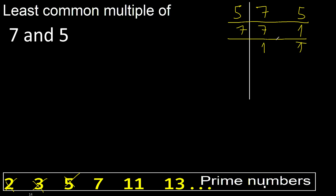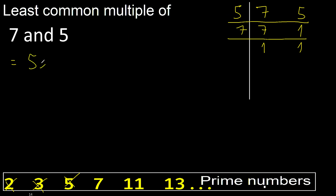Ok. 1, 1. Finish it. Multiply 5, multiply by 7. Here, ok. Multiply by 7 is 35.